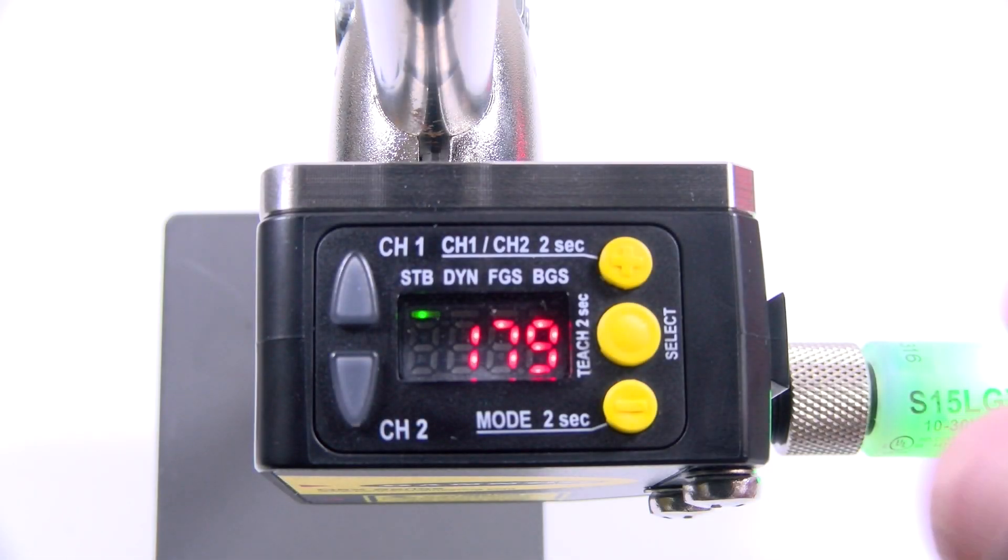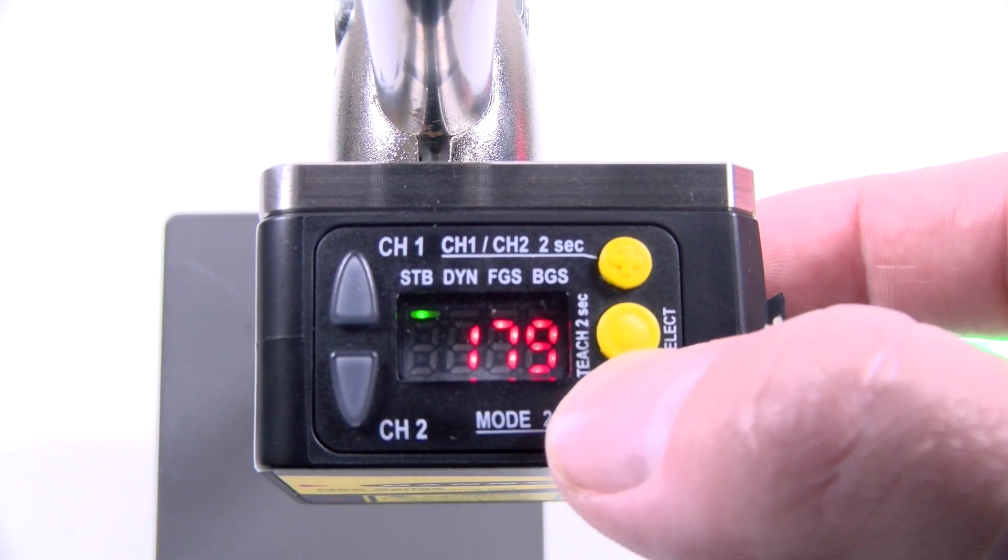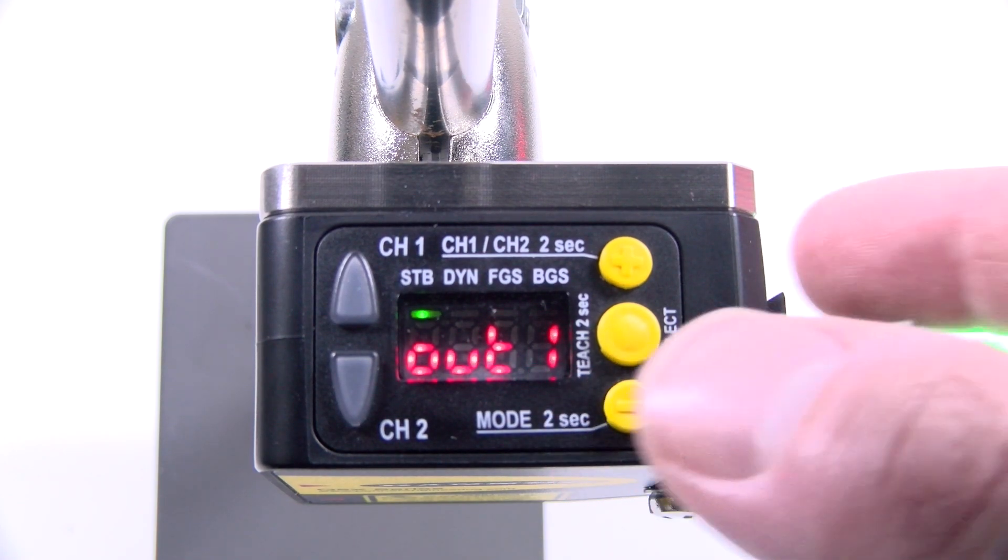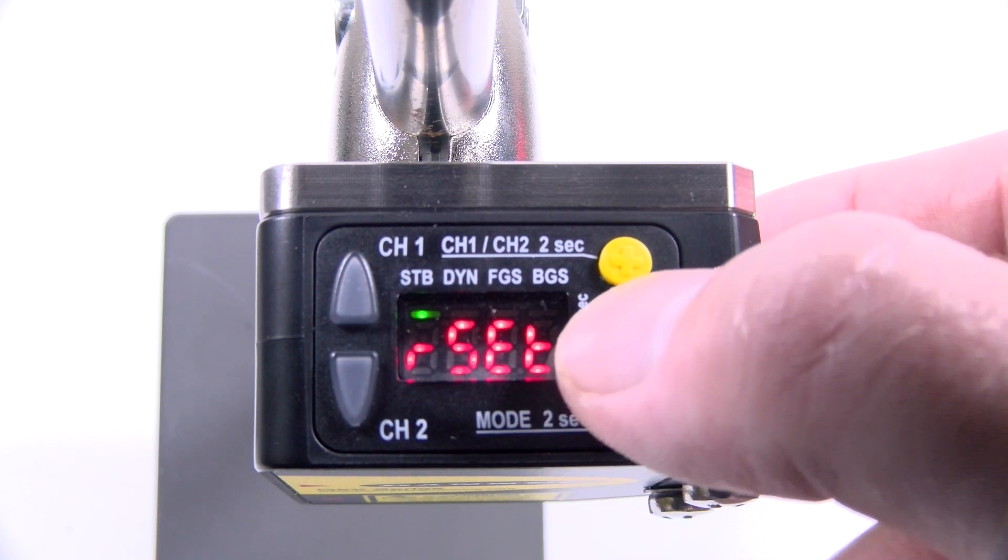For this demonstration we are going to first be setting the sensor back to factory default. Press and hold the minus button for more than two seconds to access the menu. Press the minus button once and the display will read reset.